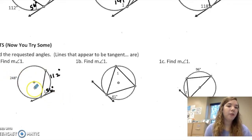Or I could have done half of 248 and subtracted from 180. There's more than one way to find these angles, but that's one way. And here, we want to find angle 1.